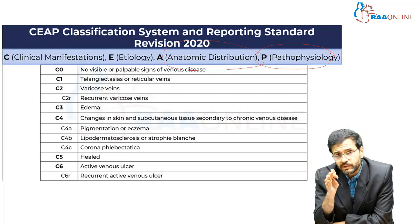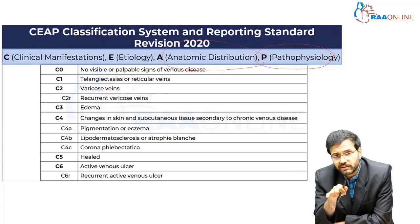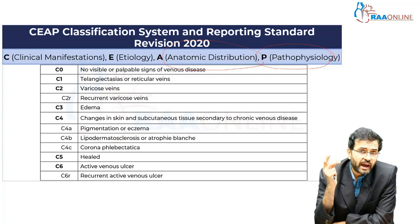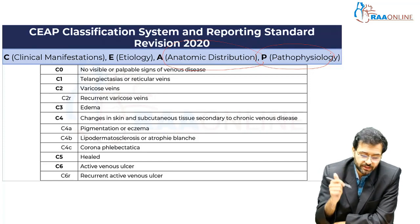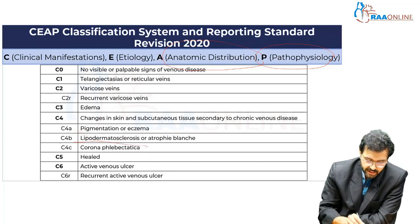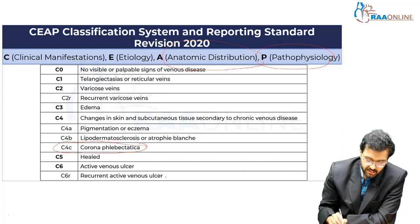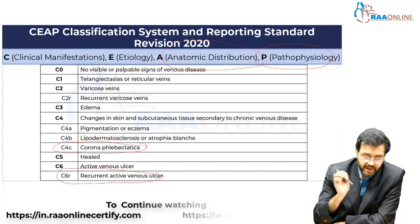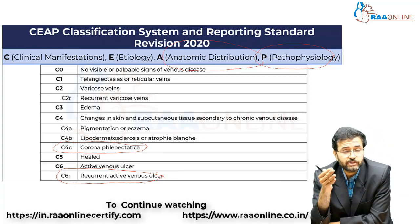Comparing the previous and present CEAP classification systems, the 2020 revision added two important new categories: corona phlebectatica (C4C) and recurrent active venous ulcer (C6R).